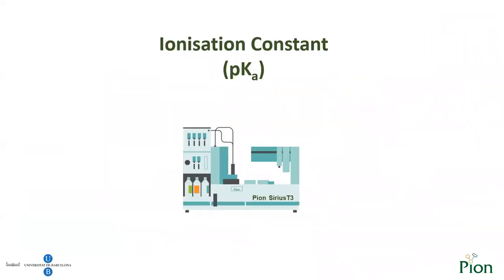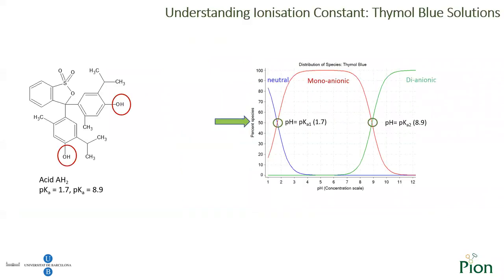Let's start with looking at the ionization constant. For molecules with only one pKa, we can say that pKa is the pH at which half the molecules in solution exist in ionized form and half exist in their neutral form — the pH at which 50% of the molecules are ionized and 50% are neutral.